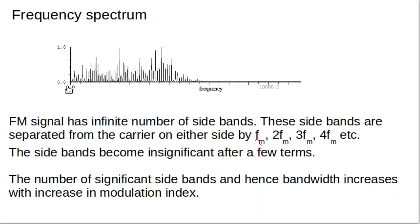Now we look at the frequency spectrum of an FM signal. FM has an infinite number of sidebands on either side of the carrier, separated from the carrier by FM, 2FM, 3FM, 4FM, and so on. On the upper frequency side: sidebands appear at fc+FM, fc+2FM, fc+3FM, etc. On the lower frequency side: sidebands appear at fc−FM, fc−2FM, and so on — sidebands exist on both sides of the carrier frequency fc.